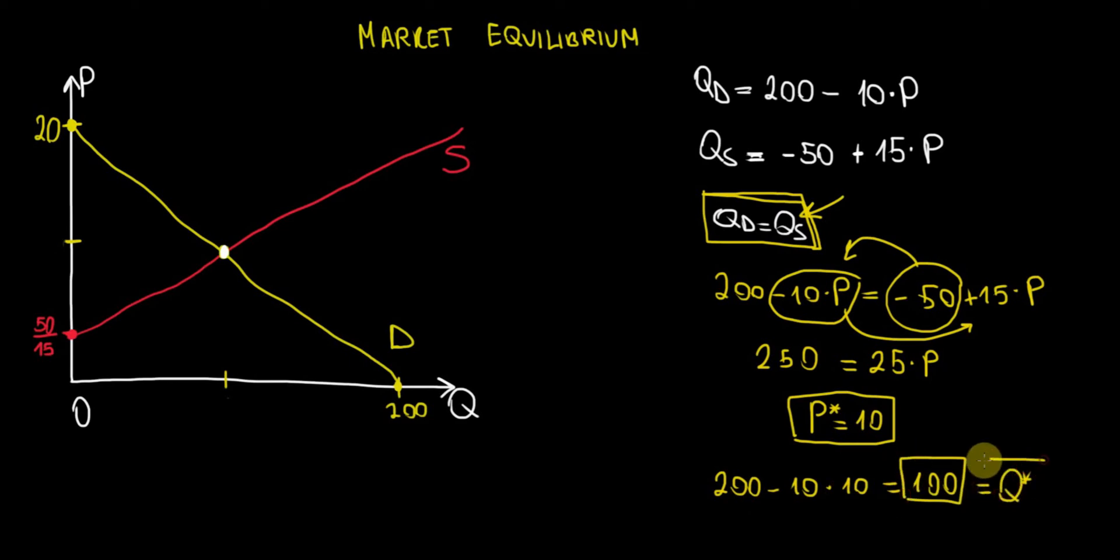This is equilibrium quantity on the market and graphically that means that this white dot over here gives us a price of 10 in equilibrium and the corresponding quantity of a hundred units in equilibrium.